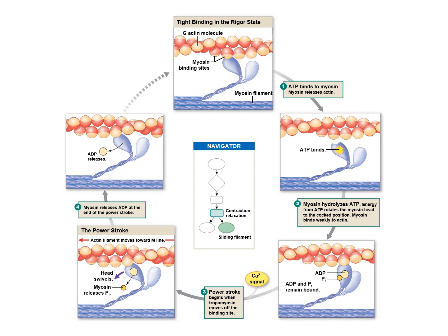Remember last time we were talking about the cross-bridge cycle. I want you to understand where in the signal pathway this is occurring — down here at the bottom of the signaling pathway. This is the response to initiation of a contraction signal. While a muscle is contracting, the myosin will cycle through this. This is not contraction and relaxation — this is how the myosin initiates force associated with contraction. So long as there is calcium present in the cytosol, the myosin will cycle through this.